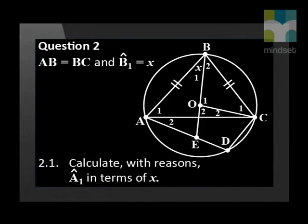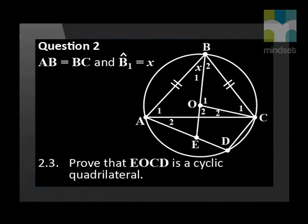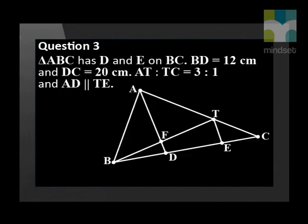Calculate with reasons angle A1 in terms of X. Show that EB bisects angle ABC. Prove that EOCD is a cyclic quadrilateral.